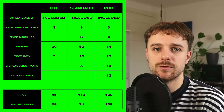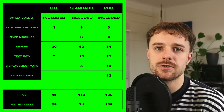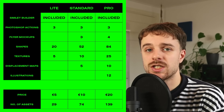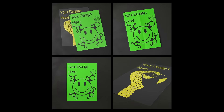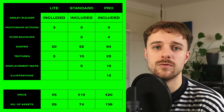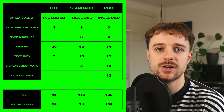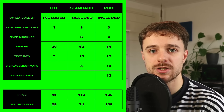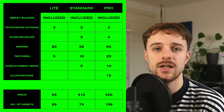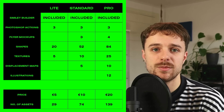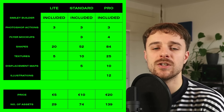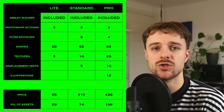If you want to get this pack for real, I actually have three versions: Light, Standard, and Pro. The Photoshop actions are included in the Light version as well as five textures and 20 of the shapes I just showed you in this demo. In the Standard pack, which is 10 bucks, you'll also get three flyer mock-ups, 52 vector shapes, 10 textures instead of five, and five of the displacement maps I just showed you. The Pro version includes three Photoshop actions, 25 textures, 84 vector shapes, 10 displacement maps, and even 12 hand-drawn illustrations such as the one you saw in the demo.